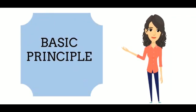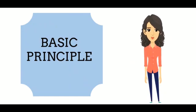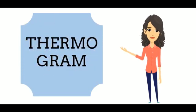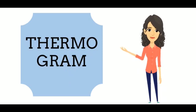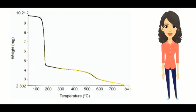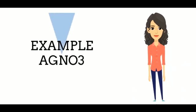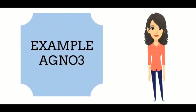In TGA, the sample is heated at a controlled rate and change in weight is recorded as a function of temperature or time. The plot of weight change against temperature is called a thermogravimetric curve. This is a simple TGA curve showing decrease in weight with temperature. Now I will explain TGA with an example.